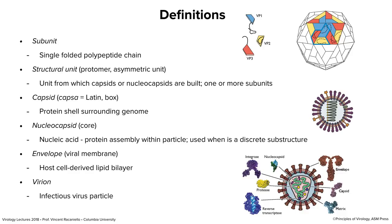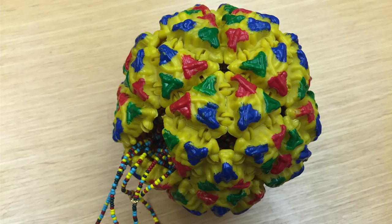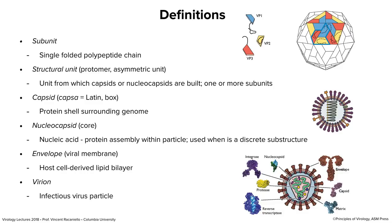Then we have nucleocapsid, which is always a challenge to understand. It's the nucleic acid protein assembly within the particle when it's a substructure. Poliovirus is composed of a capsid and RNA genome — this is a capsid, not a nucleocapsid, because it's not a substructure. If it had an envelope around it, then the capsid inside with the RNA would be a nucleocapsid. Here on the right is a diagram of influenza virus — an enveloped particle with eight RNA pieces, each an RNA-protein complex, and we call that the nucleocapsid.